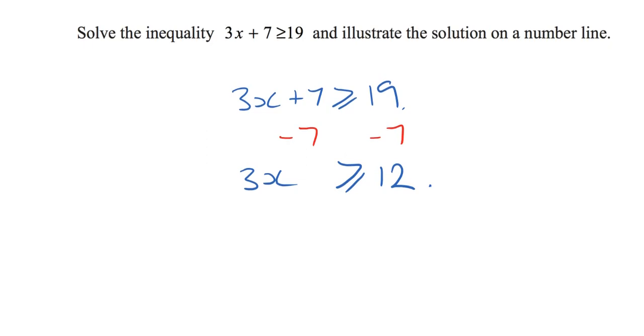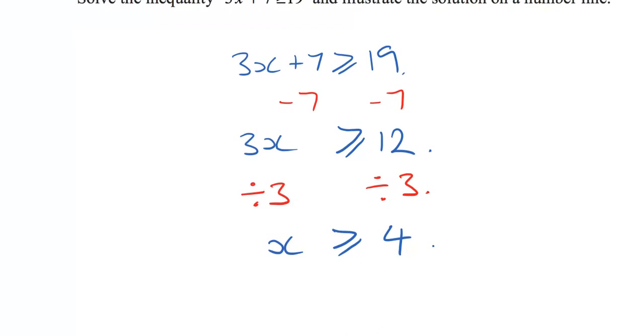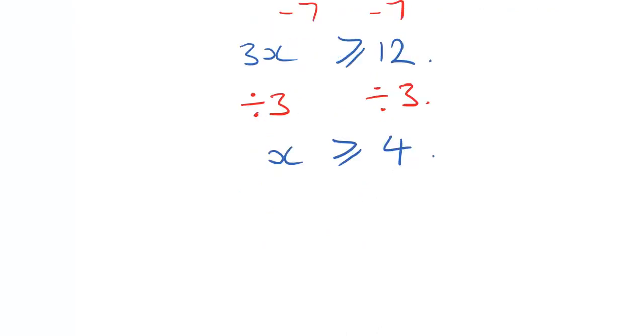To get X on its own and to isolate that X, we're now going to divide by three because we want to get rid of the three X. Currently X is multiplying by three. So if we do that, we've successfully isolated that X on the right hand side. We have four. So our answer is X is greater than or equal to four.